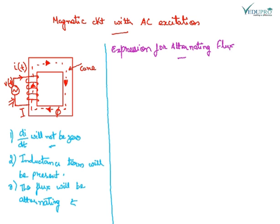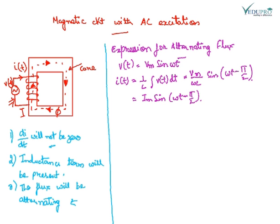Now we will derive the expression for alternating flux. Let us assume that vt is Vm sin omega t. If the coil is made up of N number of turns and its reactance is zero and inductance is L henry, then the instantaneous current through the coil is given by 1 upon L integration vt dt.